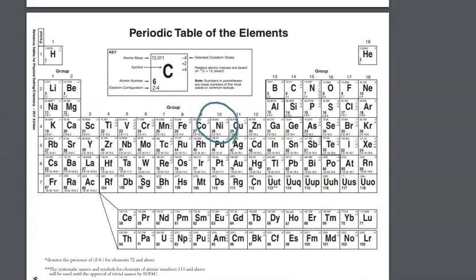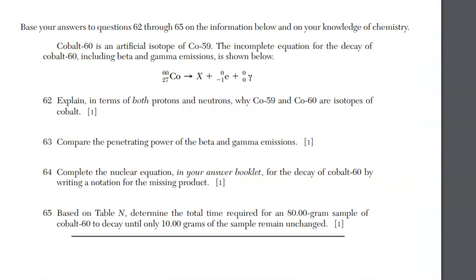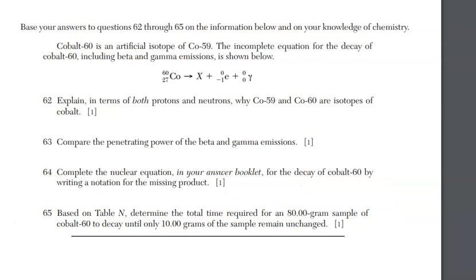Element 28 is nickel. In your answer booklet for question 64, write nickel-60. Don't forget the mass number 60 — as long as we have nickel we know it's element 28. For question 65, based on table N, determine the total time required for an 80-gram sample of cobalt-60 to decay to only 10 grams remaining unchanged.